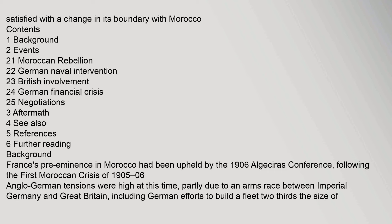France's pre-eminence in Morocco had been upheld by the 1906 Algeciras Conference. Following the First Moroccan Crisis of 1905–06, Anglo-German tensions were high, partly due to an arms race between Imperial Germany and Great Britain, including German efforts to build a fleet two-thirds the size of Britain's.